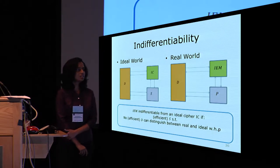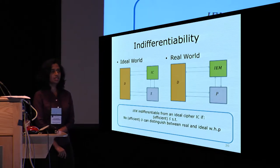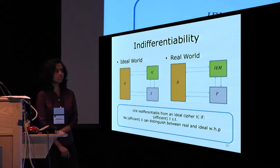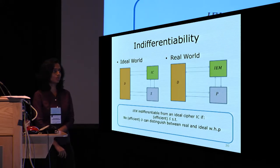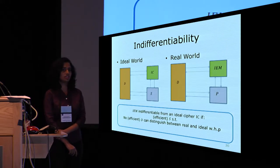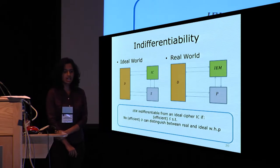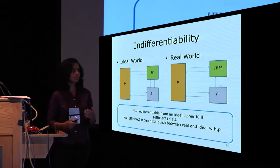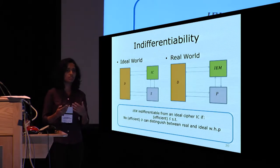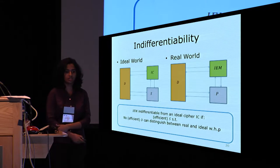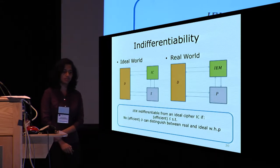Note that the distinguisher D is information-theoretic — computationally unbounded — but we restrict the number of queries it can make to its oracles. The distinguisher D can make both forward and inverse queries to the ideal cipher and to the round permutations.